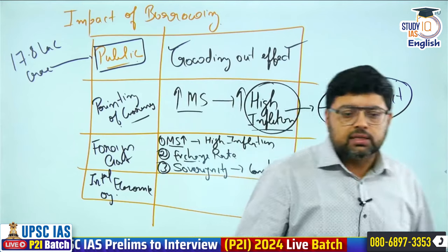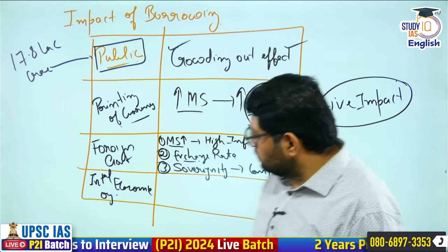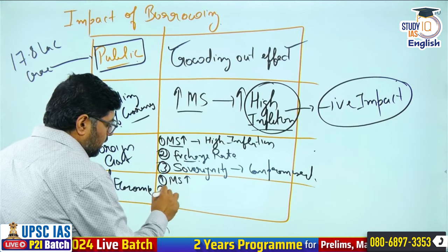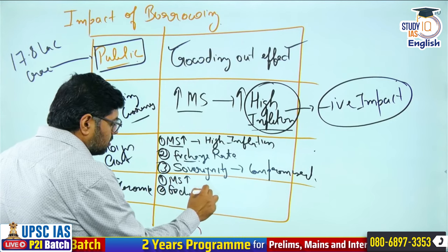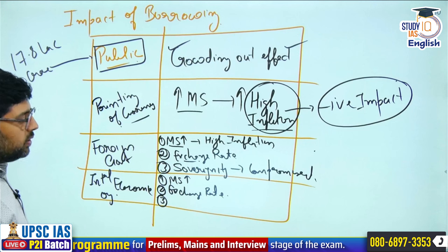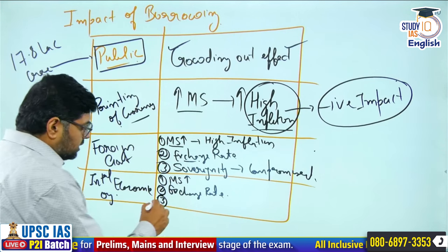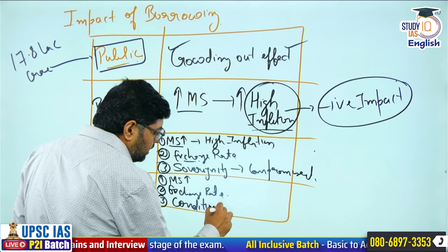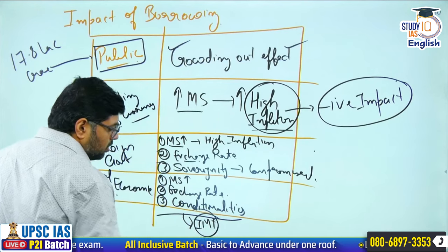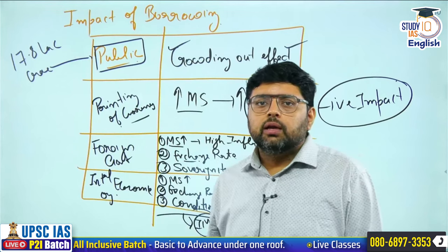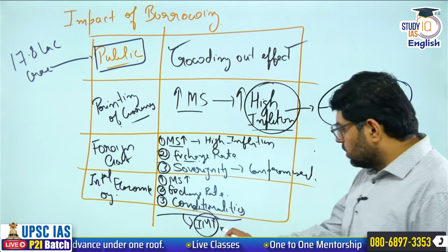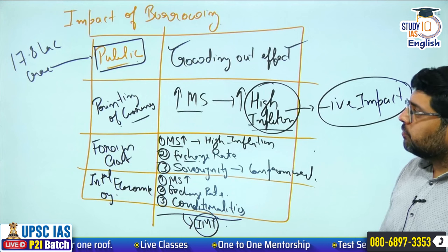When it comes to international economic organizations, money supply will again increase, and exchange rate will get impacted. Additionally, when international organizations give money, they give it on conditions — known as conditionalities. For example, the IMF gave money during the 1990s on conditions, which is known as the Washington Consensus. So every borrowing comes at some cost.